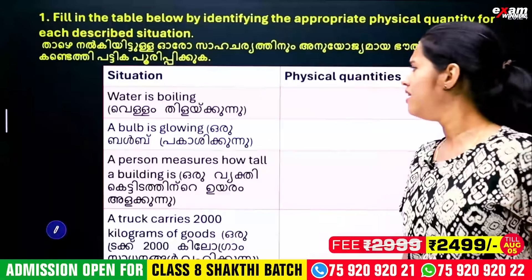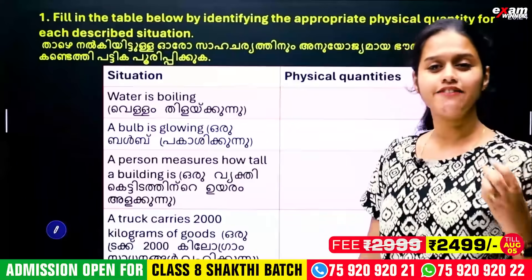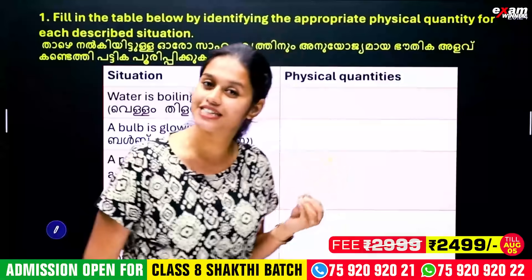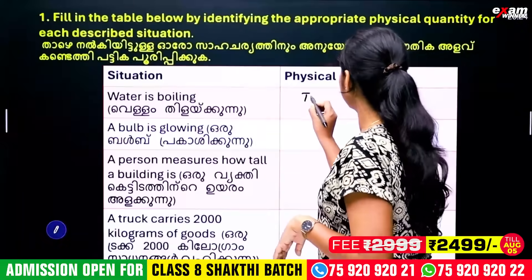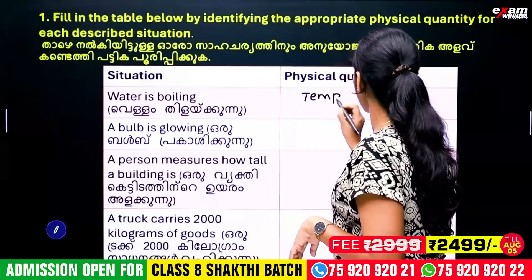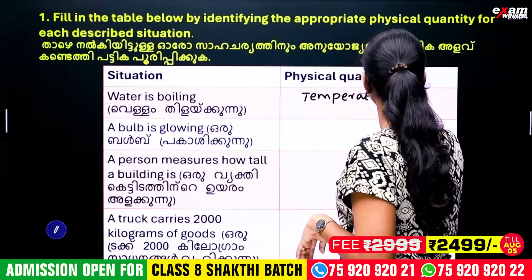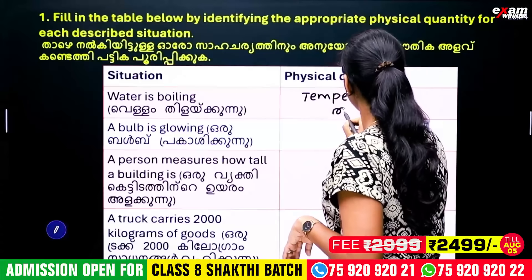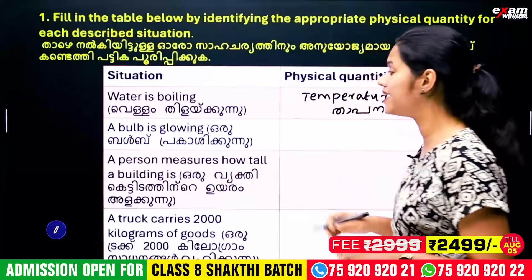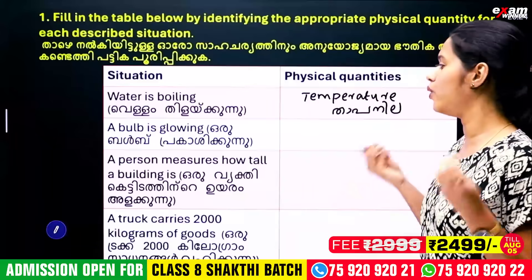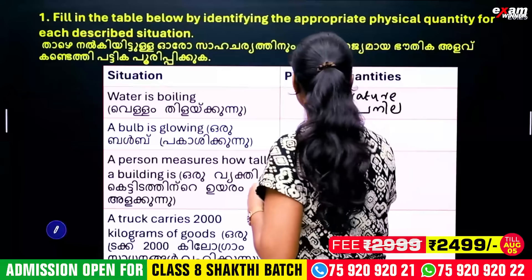Water is boiling — the physical quantity here is temperature. This bulb is glowing, and the physical quantity for that is electric current.